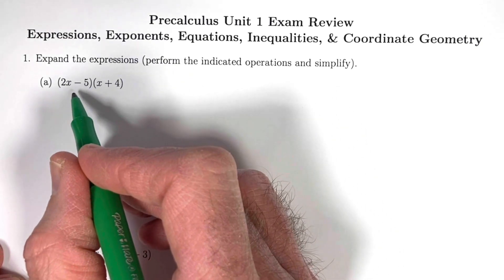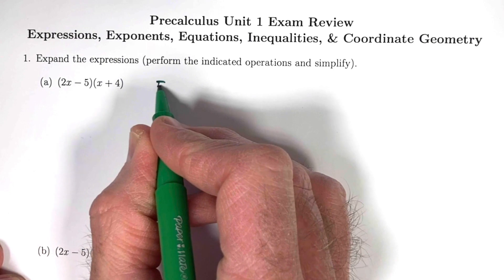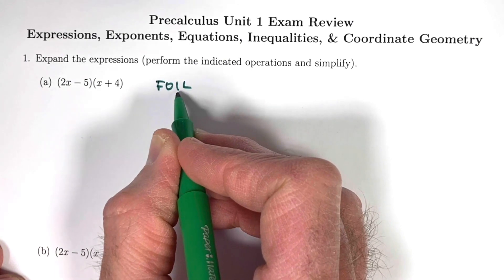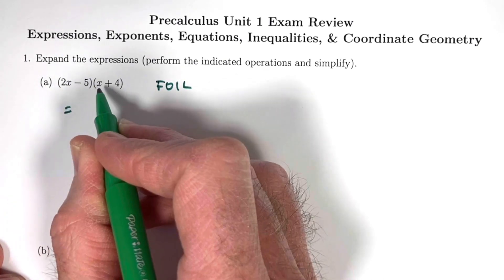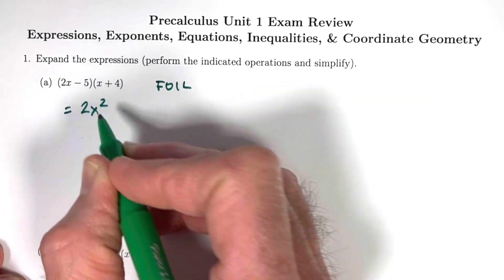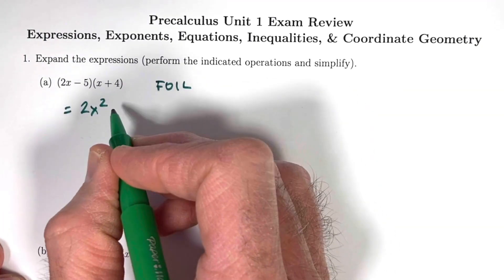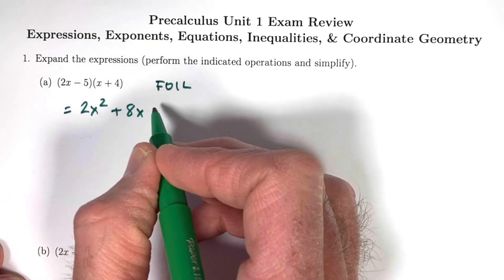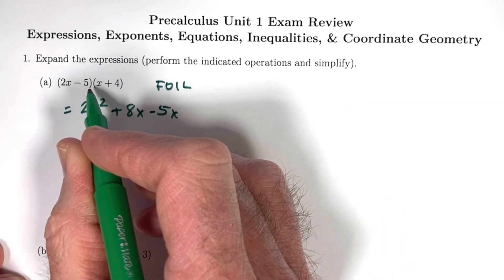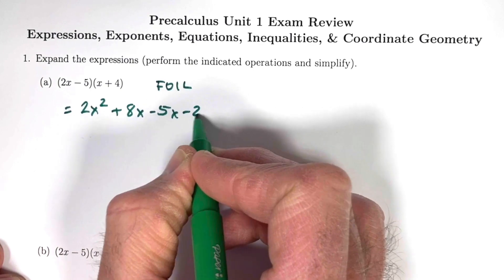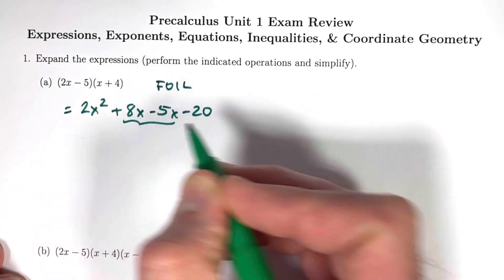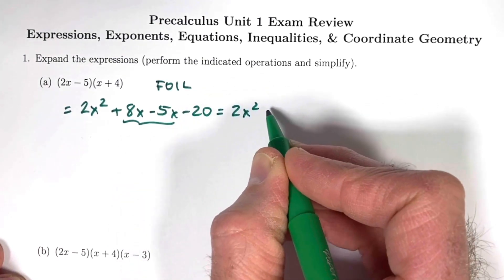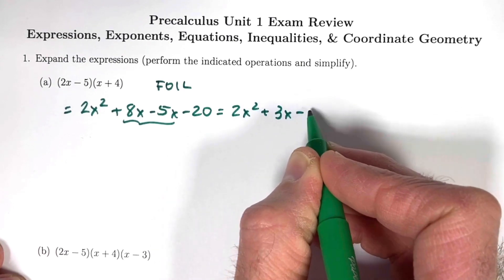We have 2x minus 5 times x plus 4 — the FOIL method. First times first: 2x times x is 2x squared. Outside times outside: 2x times 4 is plus 8x. Inside times inside: negative 5 times x is minus 5x. Last times last: negative 5 times 4 is negative 20. Combining like terms, 8x minus 5x is 3x. So the final answer is 2x squared plus 3x minus 20.